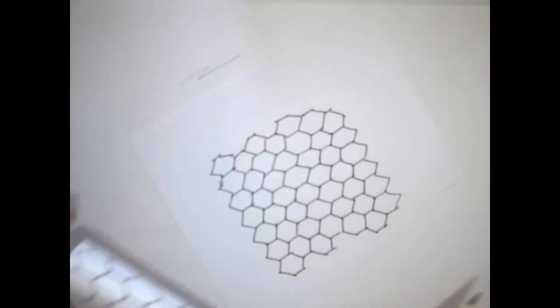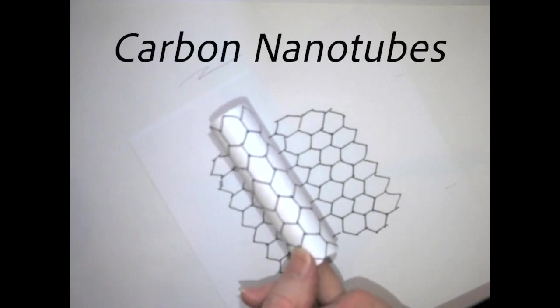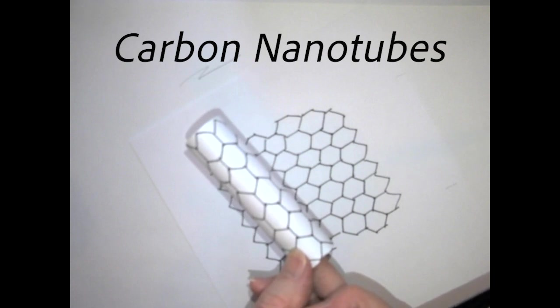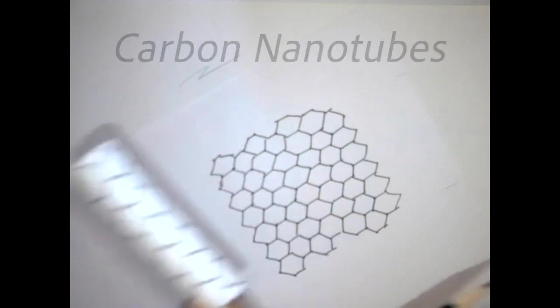These sheets of graphene can be rolled up to make what scientists call carbon nanotubes. They're rarely found in nature, but scientists and engineers have learned how to make carbon nanotubes, and they're using those carbon nanotubes to create new materials and new devices.